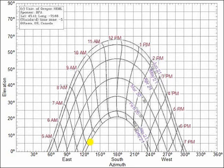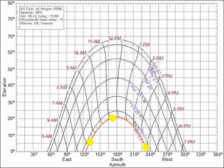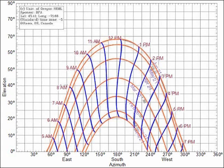The sun chart shows the path of the sun through the sky in your area for every day of the year. This line represents the path of the sun on December 21st, when the sun is lowest in the sky. This is January 21st, and so on up to June 21st, when the sun is at its highest. The hours of the day are represented by these lines.